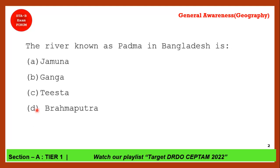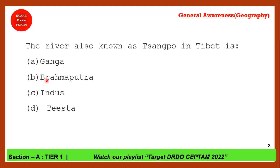Next question: Which river is known as Padma in Bangladesh? The correct answer is Ganga — when the Ganga river enters Bangladesh it is known as Padma. And when Brahmaputra enters Bangladesh it is known as Jamuna — not Yamuna, but Jamuna. So the correct answer for this question is option B, Ganga.